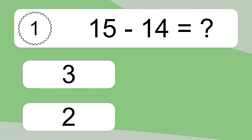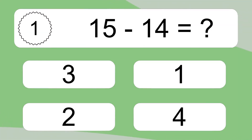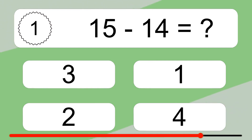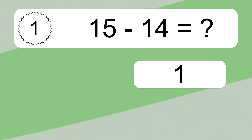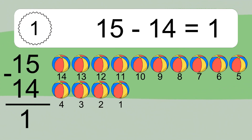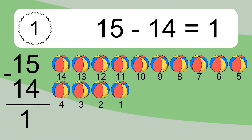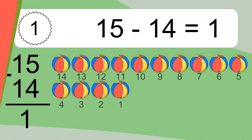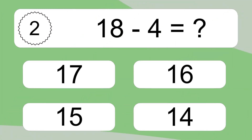15 minus 14 equals what? 15 minus 14 equals 1. Let's count it: 14, 13, 12, 11, 10, 9, 8, 7, 6, 5, 4, 3, 2, 1.